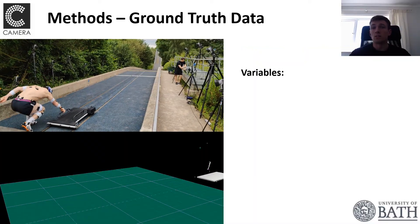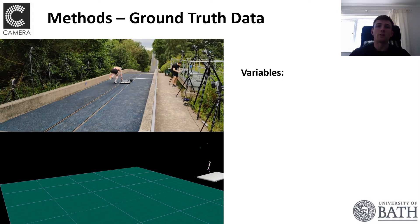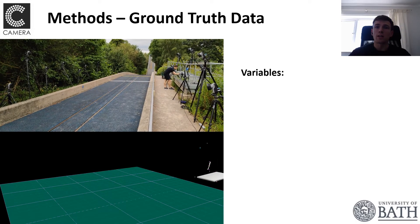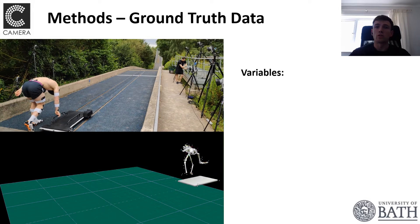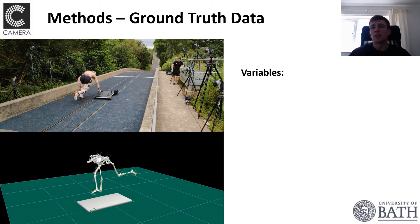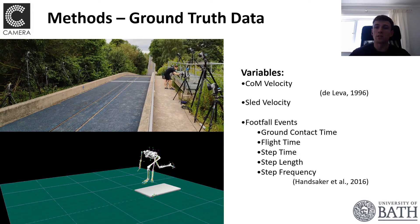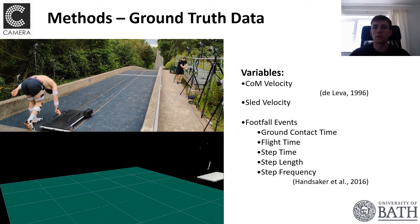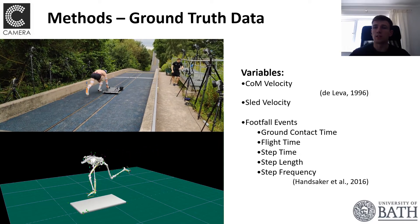Ground truth data were captured by placing a full body marker set on each athlete and a further four markers on the sled. Once marker-based data were labeled and gap filled, they were exported to Visual3D and a full body IK model was constructed, as well as a rigid sled model. This permitted the calculation of center of mass velocity and sled velocity, as well as footfall events such as ground contact time, flight time, step time, step length, and step frequency, where ground contact events were calculated using the kinematic algorithm provided by Handsaker.